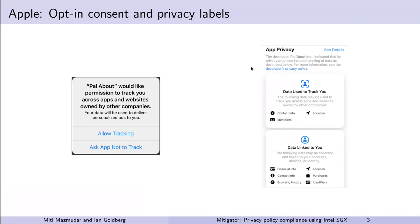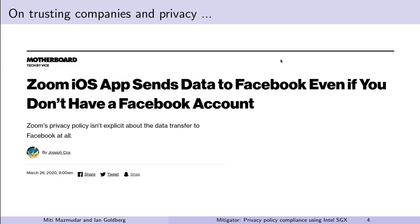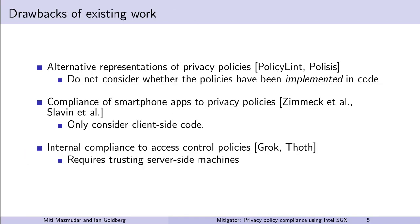However, not only can developers mistakenly forget to include data items, some companies have been known to collect users' data while mentioning it vaguely in the privacy policy. For example, earlier in the summer, Zoom was found to be sending users' location data and device identifiers to Facebook, even if the user did not have a Facebook account. Examples such as these lead us to believe that simply representing the information contained in privacy policies in different forms is not sufficient. We need to validate it by inspecting the code on the apps or on the websites.